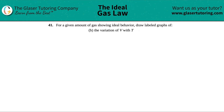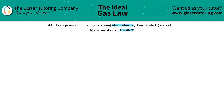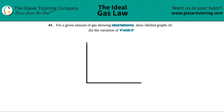Number 41. For a given amount of gas showing ideal behavior, draw labeled graphs — and now we have letter B. So we have to draw a graph of what's going to happen with volume and temperature. They said the variation of volume with temperature. I'm going to draw my axes here. Temperature is going to be the independent axis on the x-axis, and volume is going to be the dependent variable on the y-axis.